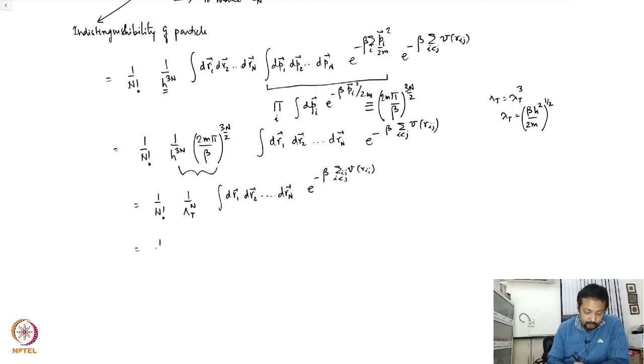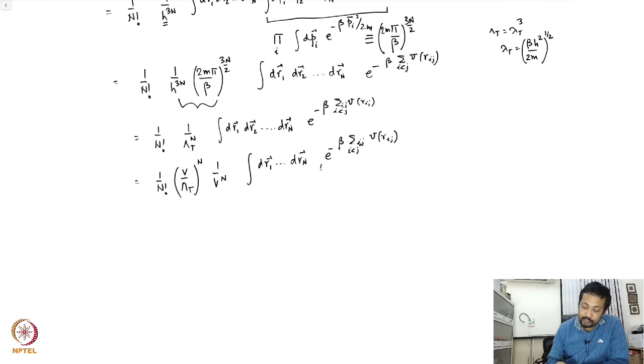We can recast this so that things are familiar with our ideal case result. We write this as V over lambda_t raised to the power n and 1 over V to the power n dr_1 dr_n e to the power minus beta sum over ij i less than j V of r_ij. If you expand this sum you see this becomes V of r_12, one particle number 1 interacting with particle number 2, then you have beta of V(r_13) so on and so forth and all of this.